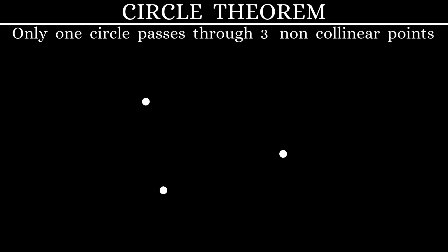We have a set of three non-collinear points. There can be only one circle which passes through all three of them. This is our circle theorem.